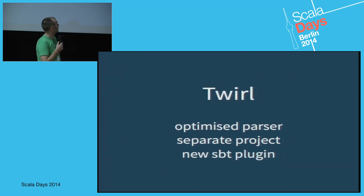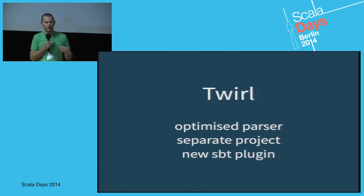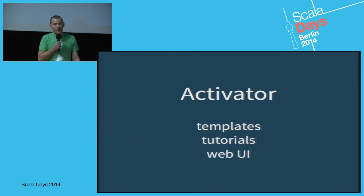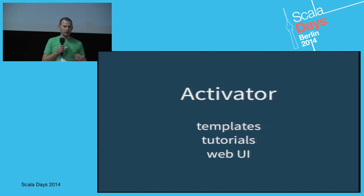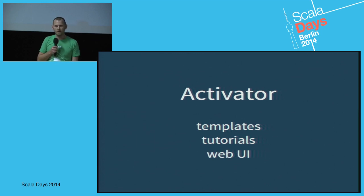An ongoing theme for 2.3 is modularization. SBT Web is one. Twirl, Play Slick is going to stay as a separate module so these can be developed faster. The Play template engine has been broken out from Play, with a separate project that has its own SBT plugin so you can use it outside of Play. It also has an optimized parser contributed from the Scala IDE team. The Play command and Play distribution have been replaced by Activator, which brings improvements, tutorials, and a web UI. We've actually created an Activator template that goes through all the highlights in Play 2.3 — you can download that, look through the tutorial, try it out.